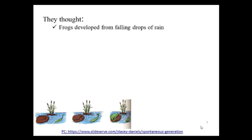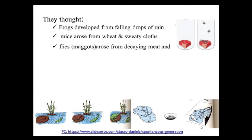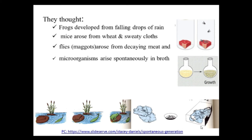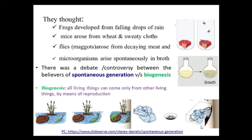Believers of spontaneous generation thought that frogs developed from falling drops of rain, mice arose from wheat and sweaty clothes, flies and maggots arise from decaying meat, and microorganisms arise spontaneously in broth. There was debate between the believers of spontaneous generation and the believers of biogenesis. The theory of biogenesis states that all living things can come only from other living things by means of reproduction.